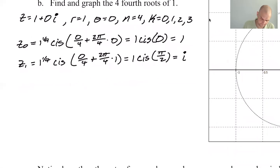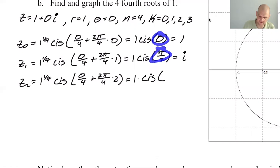Z₂, 1 to the 1/4, cis 0 over 4 plus 2π over 4, which is π/2, times 2. So this will be 1 cis. I already know what I'm going to do. I'm just going to keep adding π/2. So 0, then π/2, then 2π over 2, which is π. This will give me, so the cosine of π is negative 1 and the sine is 0. So this is just negative 1.